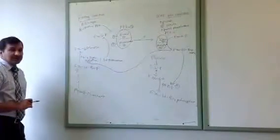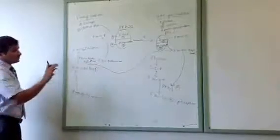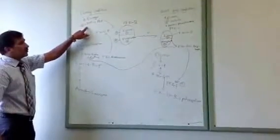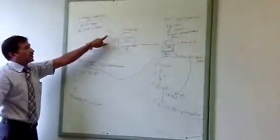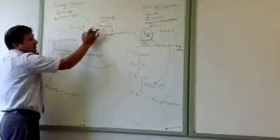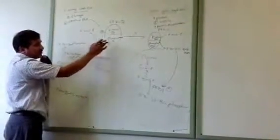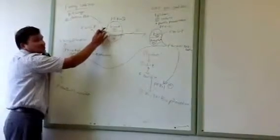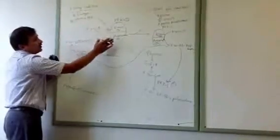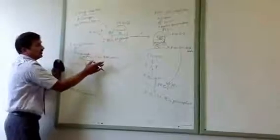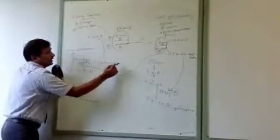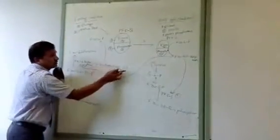In fasting condition, glucagon increases cyclic AMP, which activates protein kinase A, which phosphorylates PFK2 — making PFK2 kinase inactive and phosphatase active. Under glucagon influence, the active PFK2 phosphatase converts fructose 2,6 bisphosphate back to fructose 6 phosphate, thereby decreasing the concentration of fructose 2,6 bisphosphate.